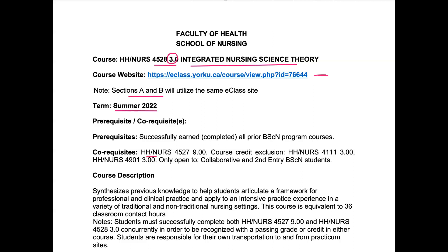The co-requisite to this course is 9.04527. The course description is that it synthesizes previous knowledge to help students articulate a framework for professional and clinical practice, and apply this framework to an intensive practice experience in a traditional or non-traditional nursing setting. It's equivalent to 36 hours — this is the theory part of your Integrated Practicum, and you will take that theory and apply it at your Integrated Practicum site.